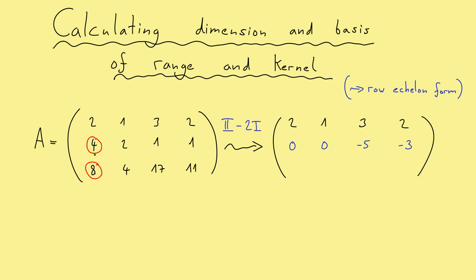And of course we also want to do the same thing in the third row. Here we have to subtract 4 times the first row. Then we get the zero here, and then we subtract 4 here, so also zero here. Then we get plus 5 here and plus 3 here. So what you see is that we are almost finished — we just have to do one more step to reach the row echelon form.